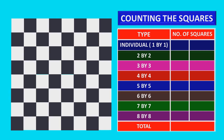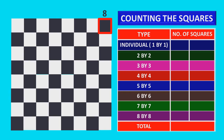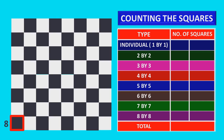So, we know the types and the counting technique of the squares. Now, using the technique, we are going to count the squares. First, we count the individual squares. There are 8 columns and 8 rows. So, 8 into 8 is equal to 8 squared, which is 64 squares.